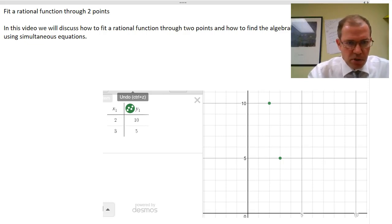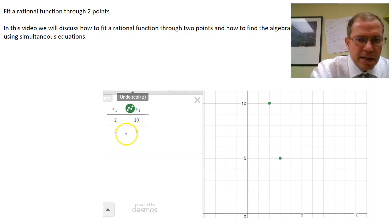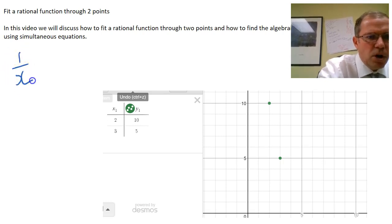So imagine we've got the two points, 2, 10, 3, 5, here and here, and we want to fit a rational function, something of the family 1 over x, through that.